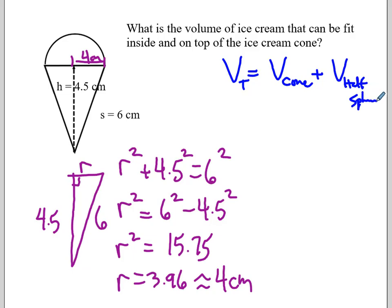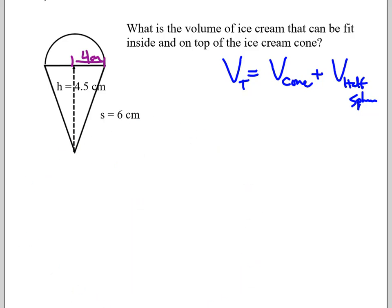I always find it really helpful to write that down. It reminds me what I'm calculating. I'm just going to get rid of this Pythagorean theorem. We already know that radius is 4. So now let's go after the volume of the cone.